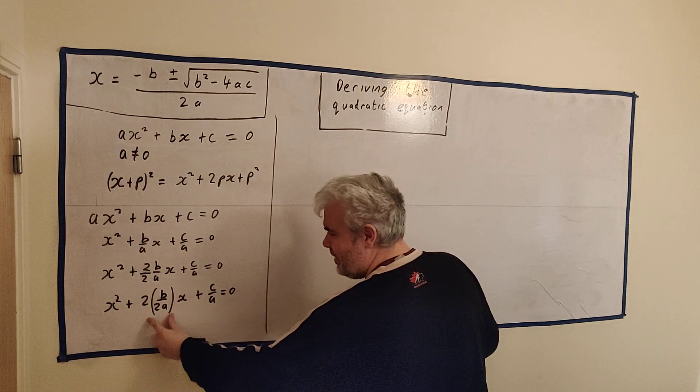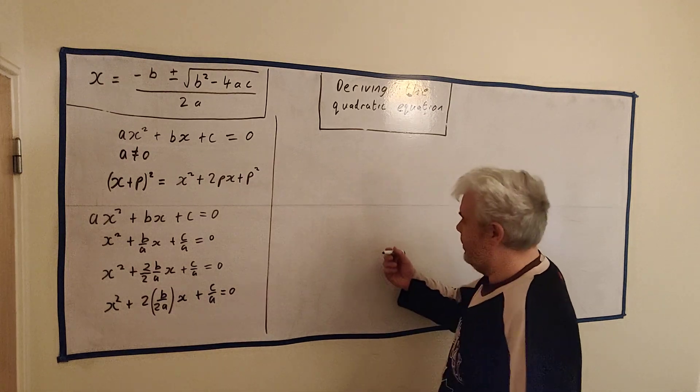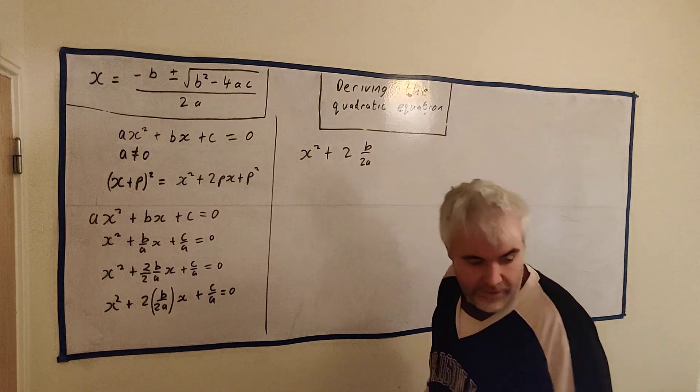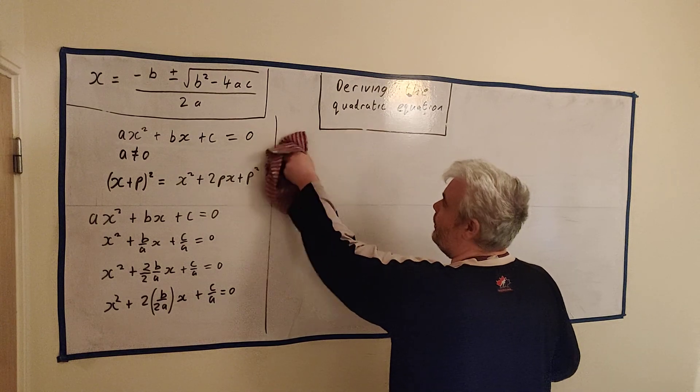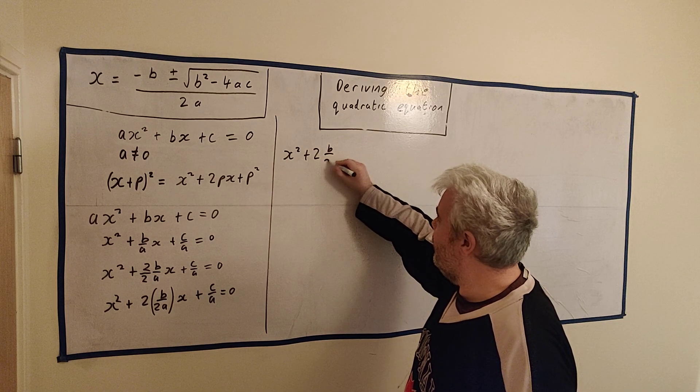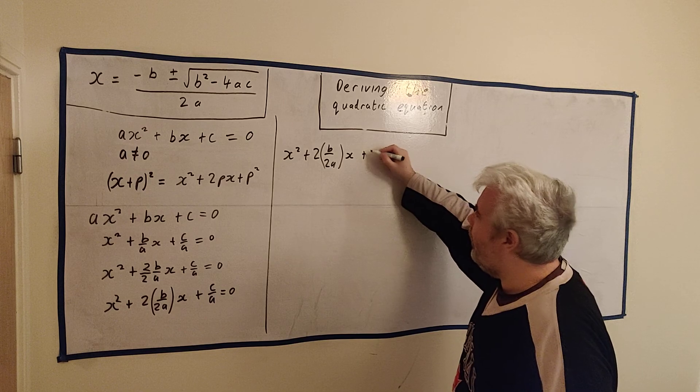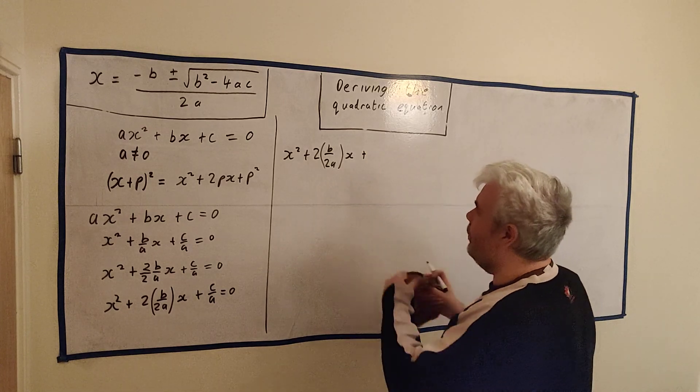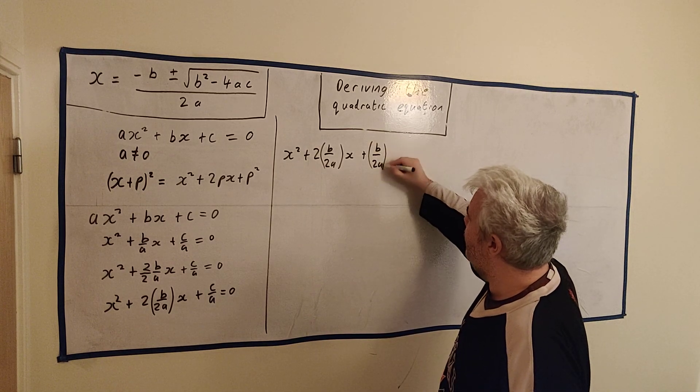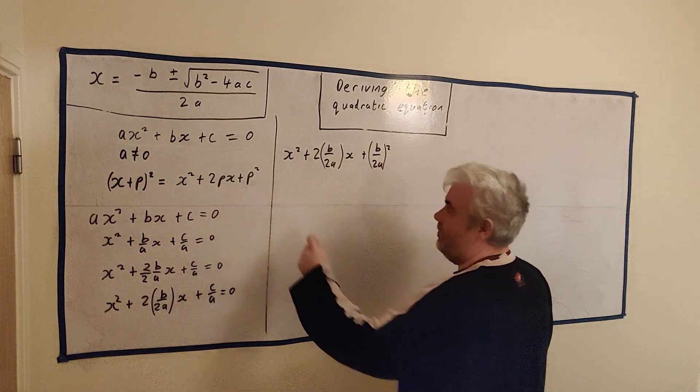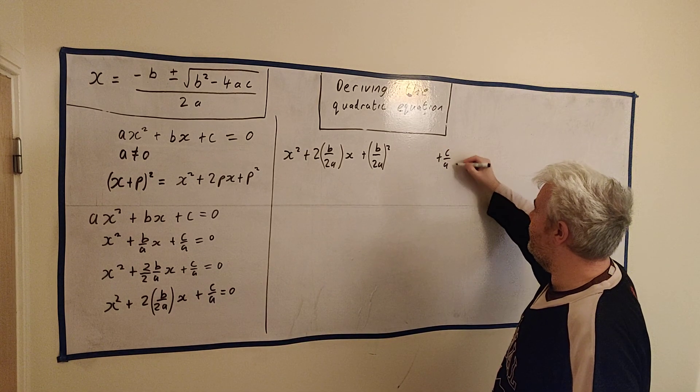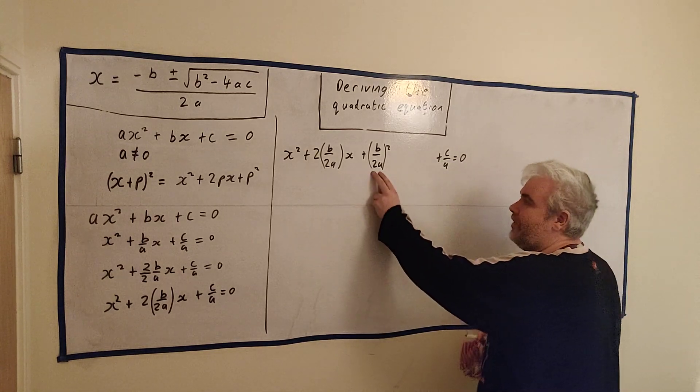We're missing the p squared. Remember, p is this bracket. We're missing this bracket squared. So that's a problem. What I would really like to be here is whatever is here squared. This is what I would love to be here. That would be great. That would make it look like this. So you know what? And there's still a c over a here. Plus c over a equals zero.